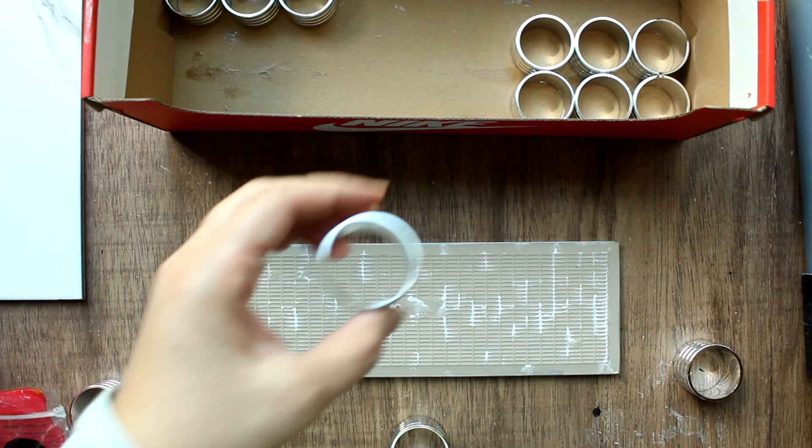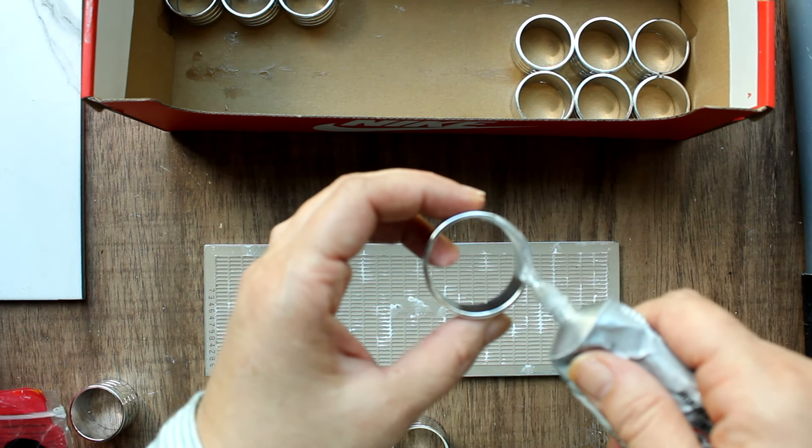Once the paint was dry, I added the napkin ring feet to one of the tiles. This tile will end up being your bottom shelf.